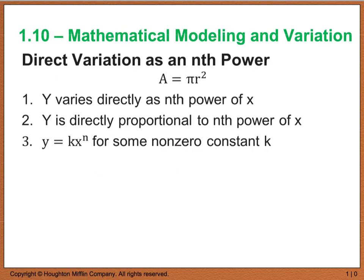We also will see direct variation as an nth power. And an example of this is your area of a circle formula. We know that area is equal to pi r squared. And this is read as y varies directly as the nth power, or in this case it would be as the second power of x or r. Y is directly proportional to the nth power. And we can say that y equals k times x to the nth power for some non-zero constant k. Again, k is the proportionality constant.